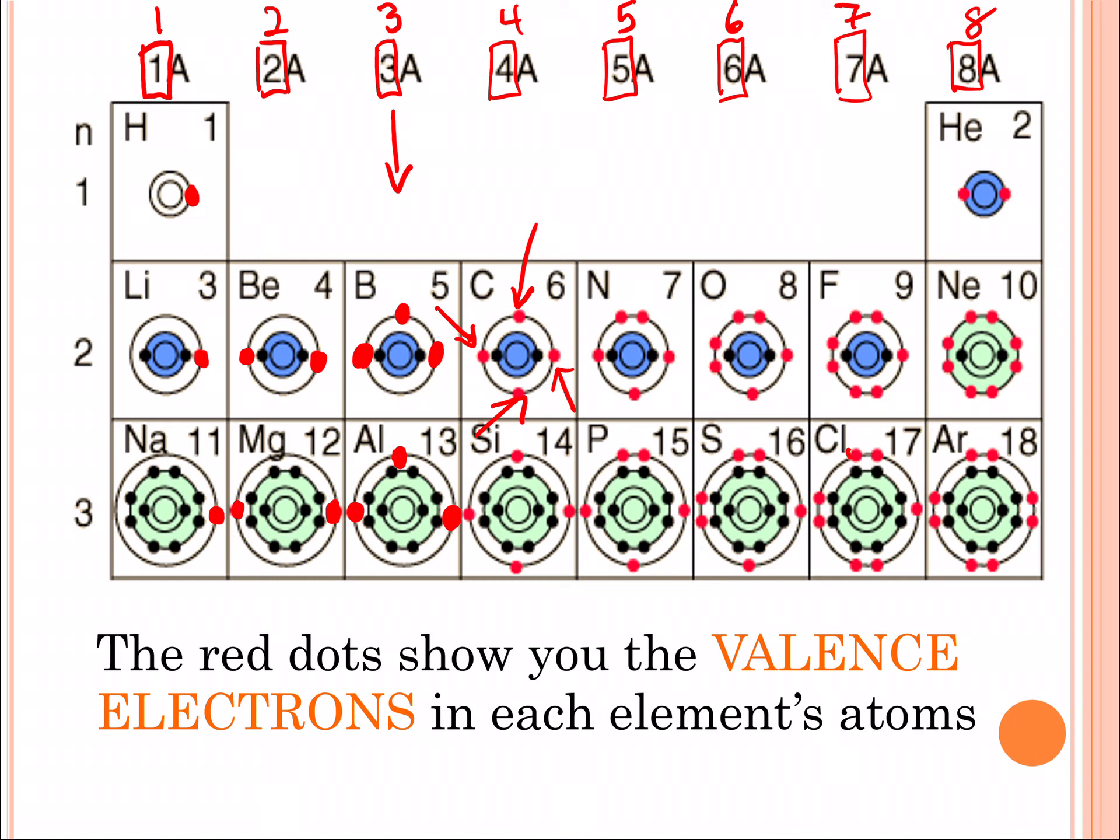For example, we noticed in our previous video that chlorine had seven electrons in its outer shell. Now I can tell you that the outer shell electrons we refer to as valence electrons.